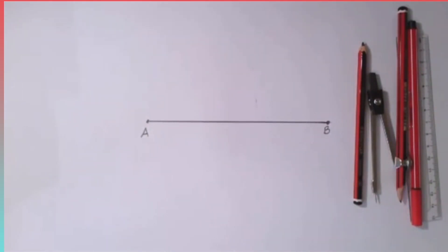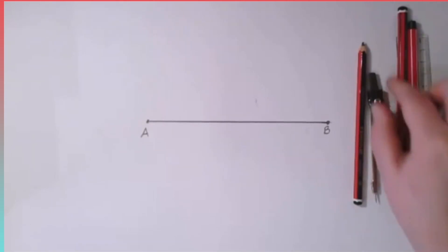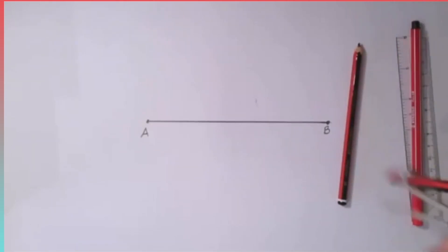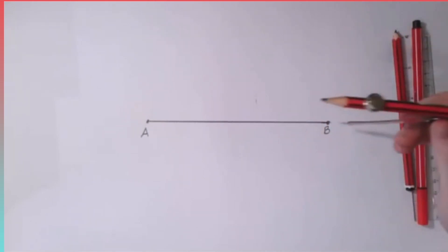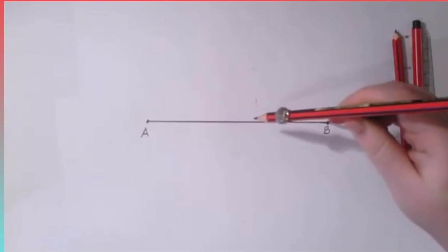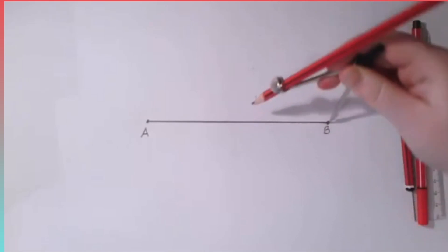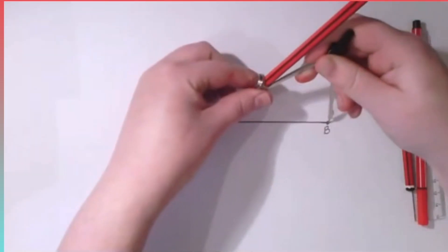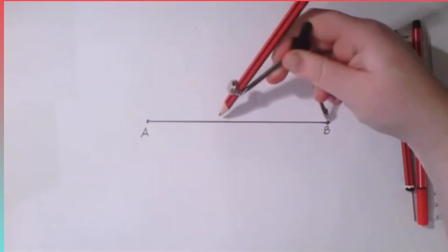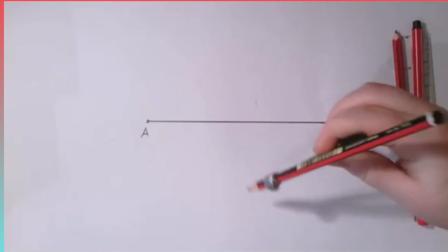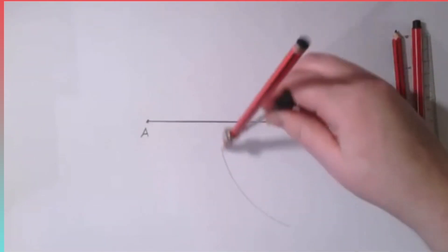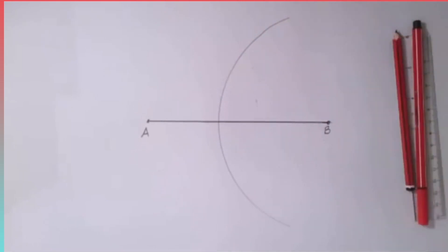A perpendicular bisector means we want to bisect the line at a right angle to the line. The first thing we are going to do is take our compass and place it on B. We need to make sure that our compass width is greater than half the length of the line. We are then going to draw an arc through this line.